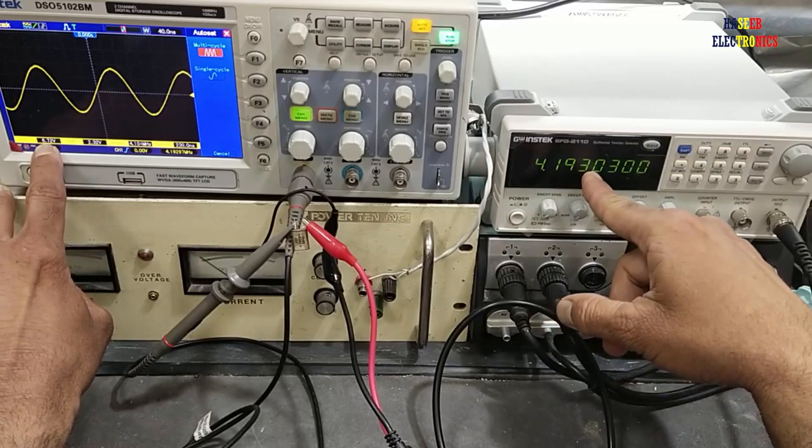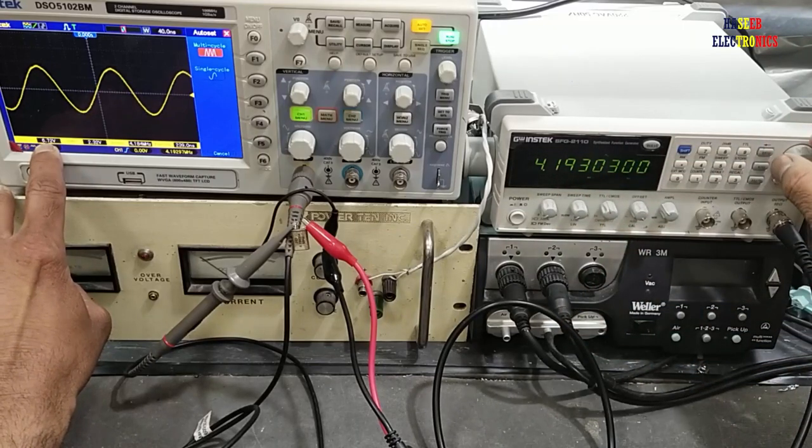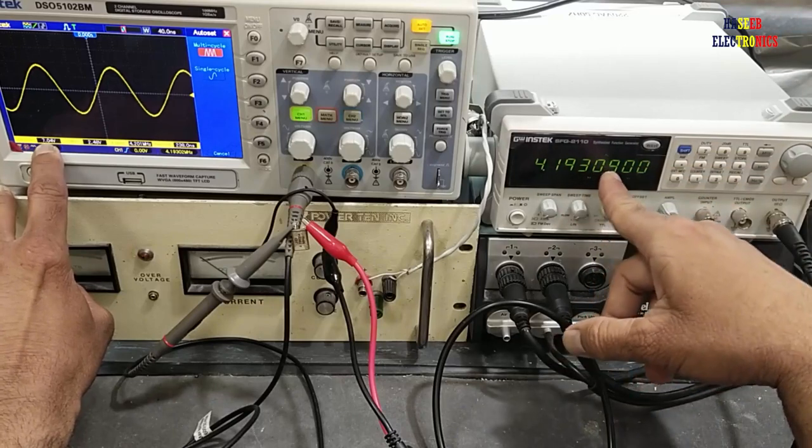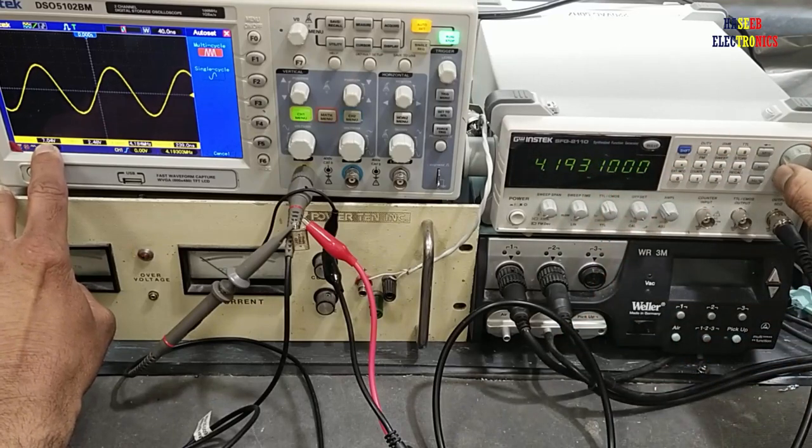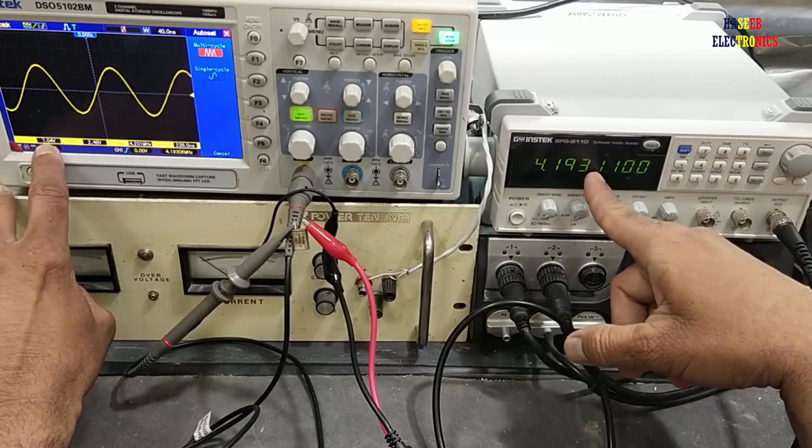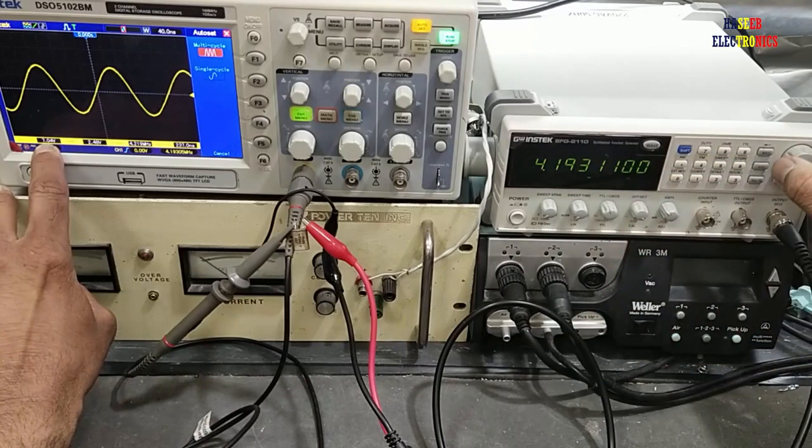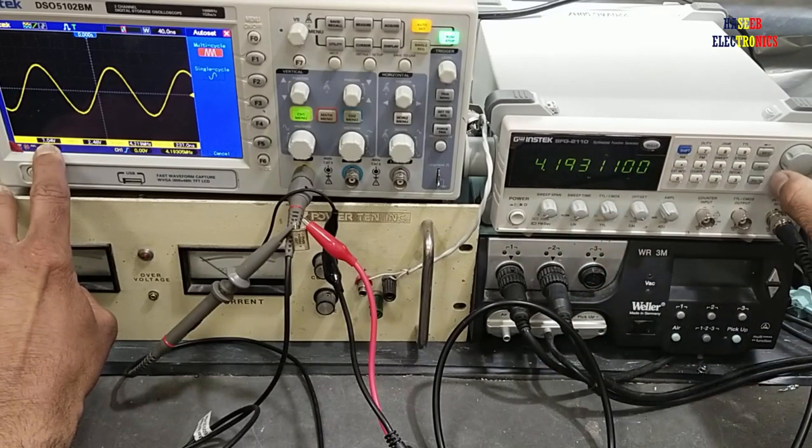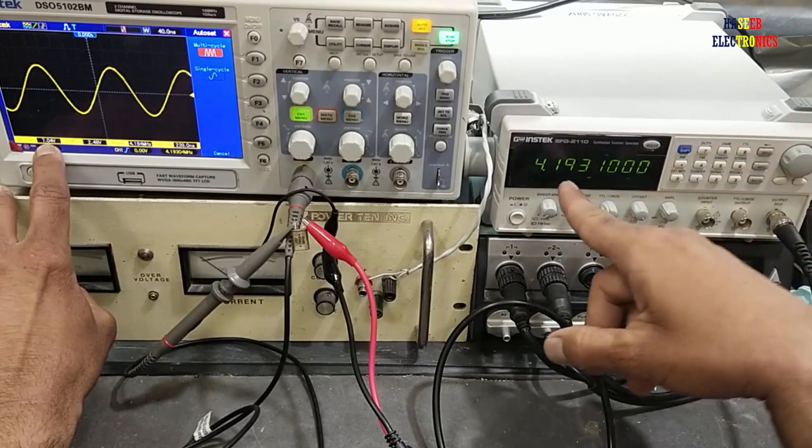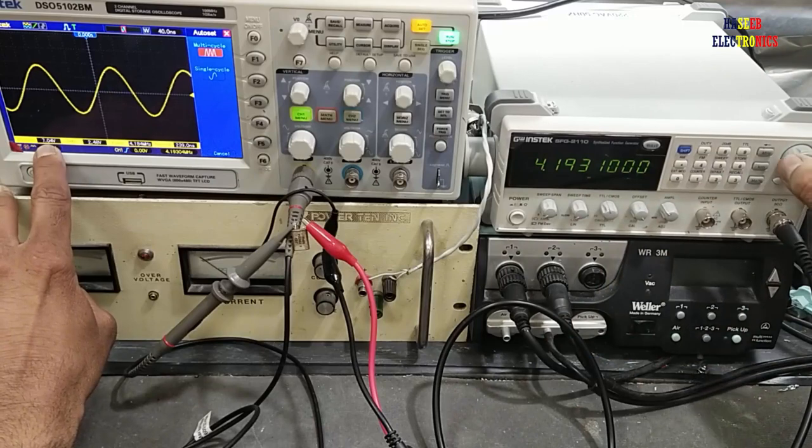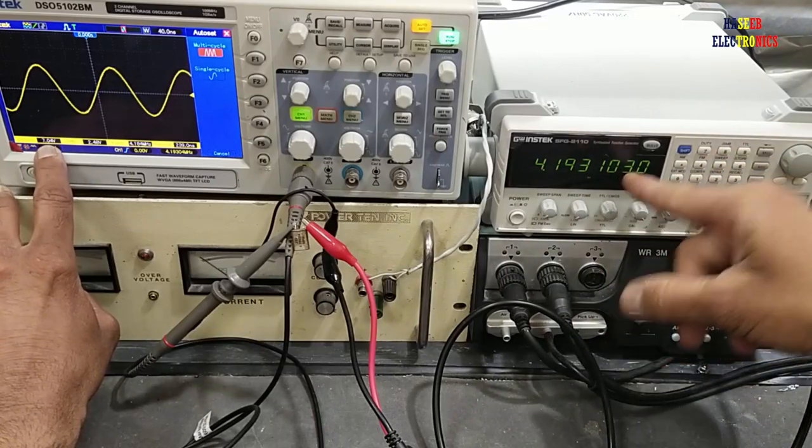Testing 4.19303 gives 6.72 volts, 4.19309 gives 7.04 volts, and 4.19311 shows 6.0 volts with voltage drop. At 4.19304, we continue adjusting. Now we will move to the next digit for even finer precision.